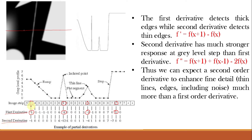From this example, we can see that the second order derivative enhances fine details — that is thin line edges including noise — much more than the first order derivative.